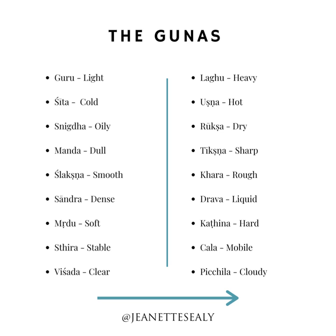Snigdha is oily and ruksha is dry. Manda is dull, tikshna is sharp. Slakshna is smooth and khara is rough. Sandra is dense and drava is liquid. Mridu is soft, kathina is hard. Sthira is stable, chala is mobile. Vishada is clear and picchila is cloudy. You can begin to see these pairs of opposite qualities at play in all of creation.